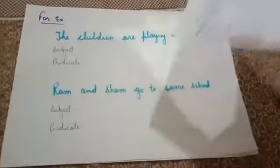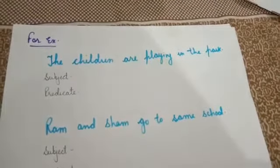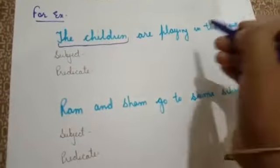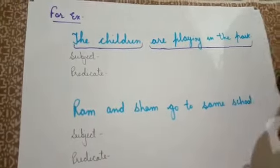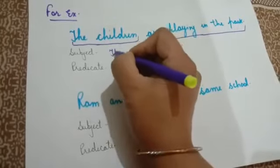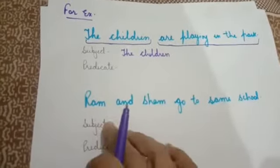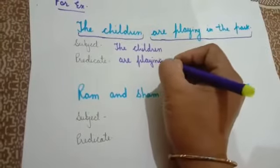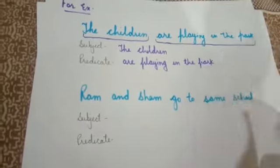For better understanding, look at these examples. The first one is: 'The children are playing in the park.' Here the sentence is talking about the children. What is the action here? Playing in the park. So 'the children' is the subject, and 'are playing in the park' is the predicate.